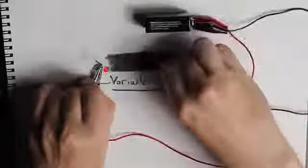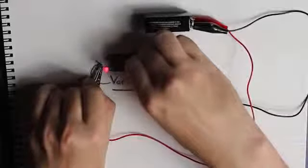You'll also notice that the LED gets brighter and darker depending on how close we get to it. That's because we've actually created a variable resistor.